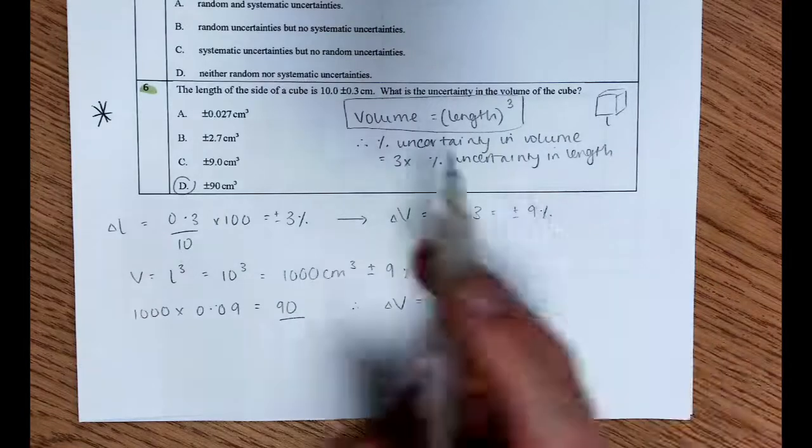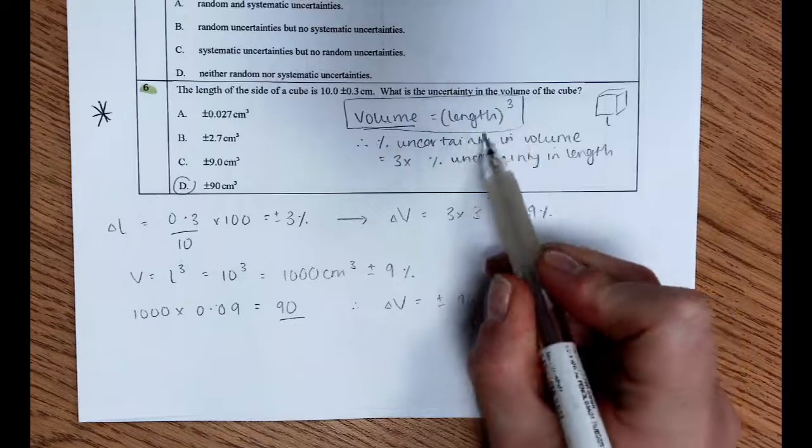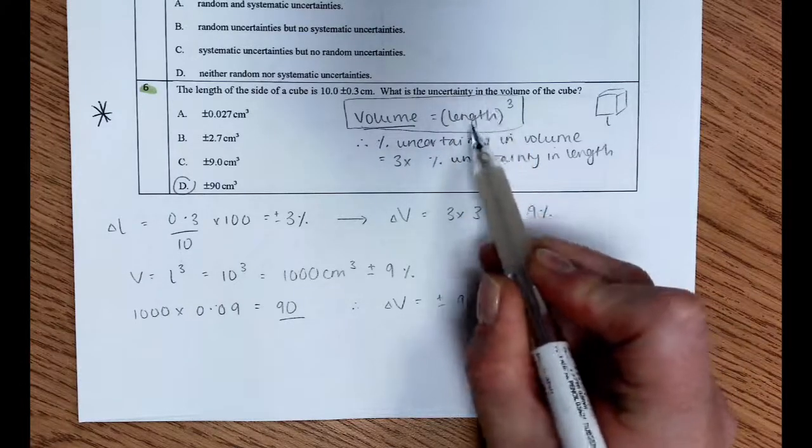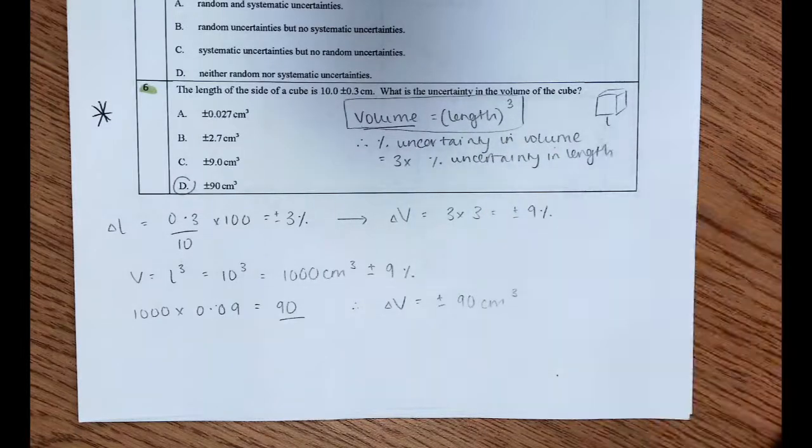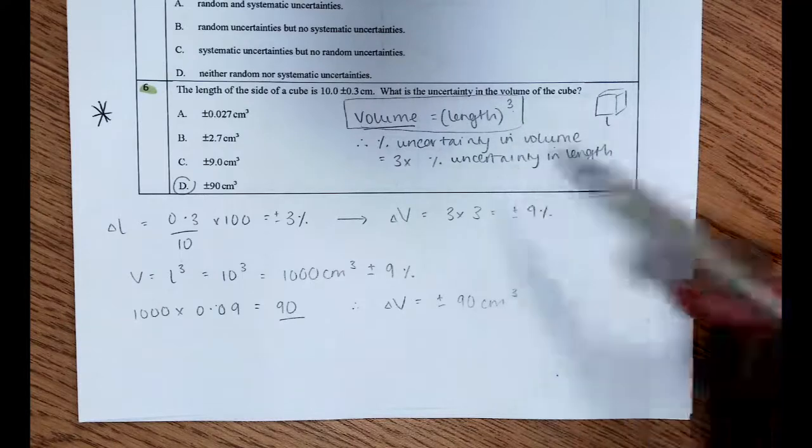the percentage uncertainty in that value is we find the percentage uncertainty in the quantity that we are raising to a power, and then we multiply by the value of the power. So the percentage uncertainty in the volume is going to be three lots of the percentage uncertainty in the length.